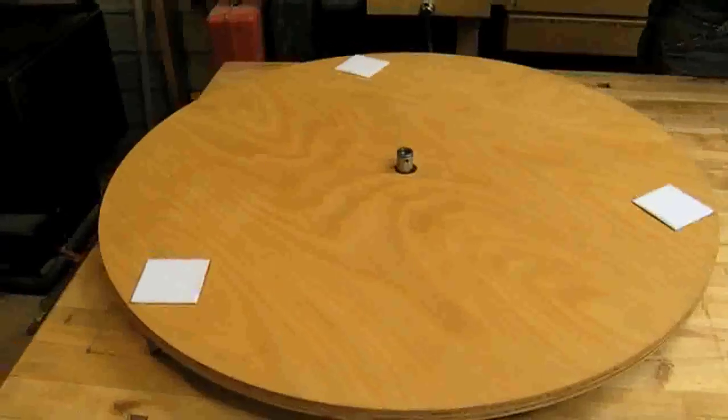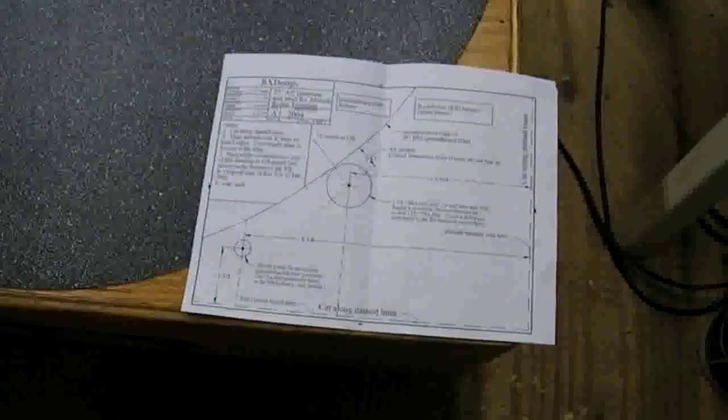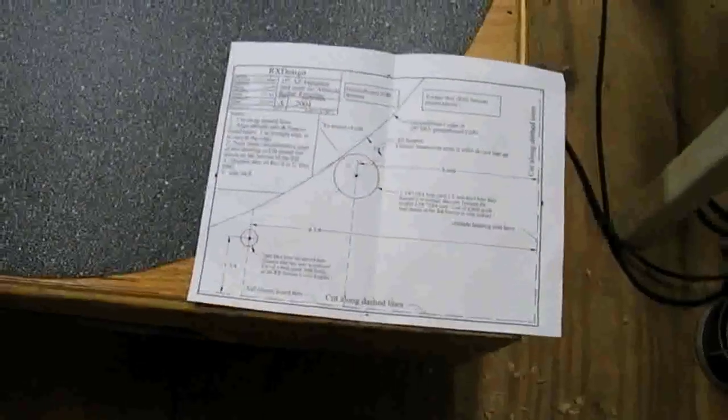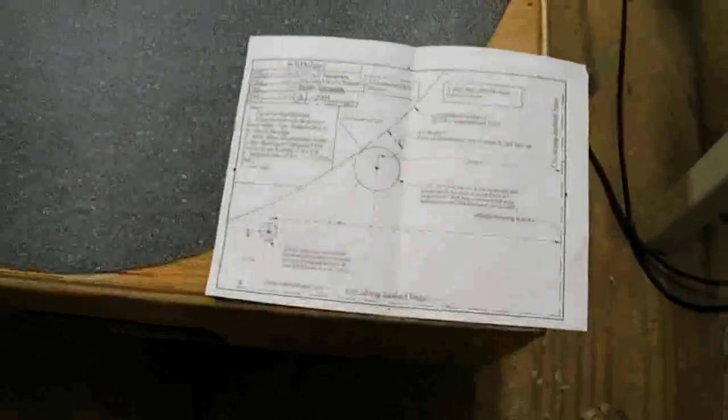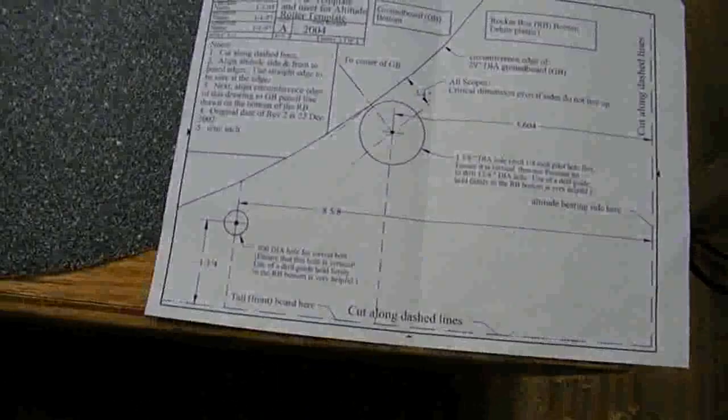We've got our center pivot fixed here and we're using the ground board just to get the measurement of where we need to put this on the edge. So we have the ground board setting on the rocker box and we did a center punch for the pivot and the big hole.